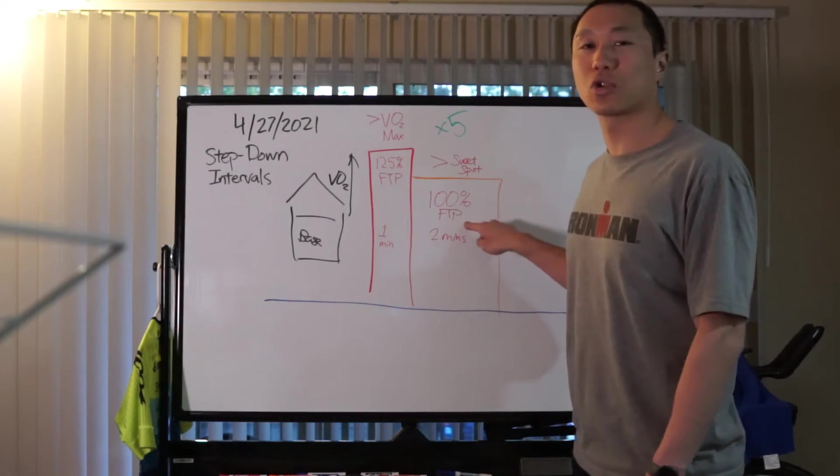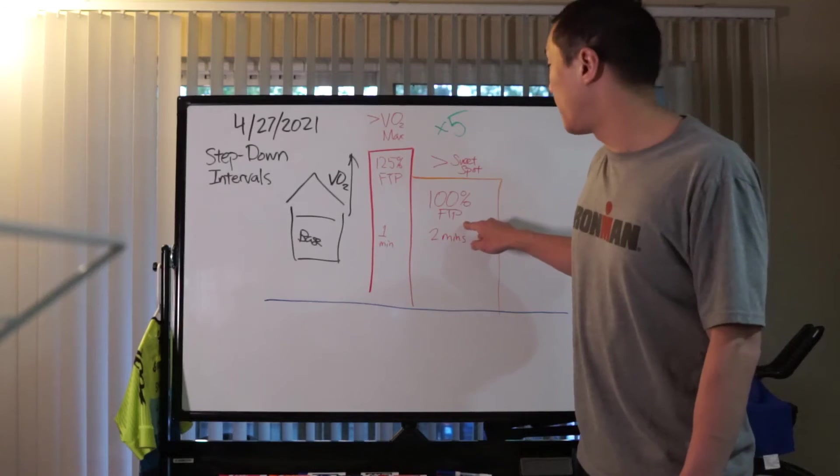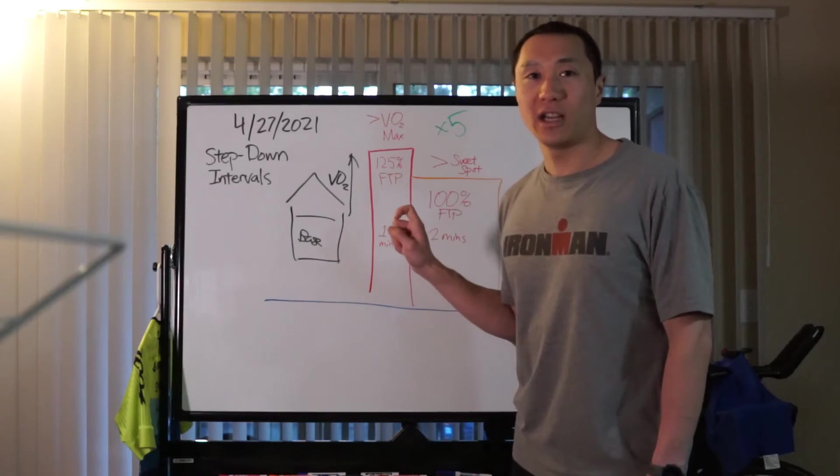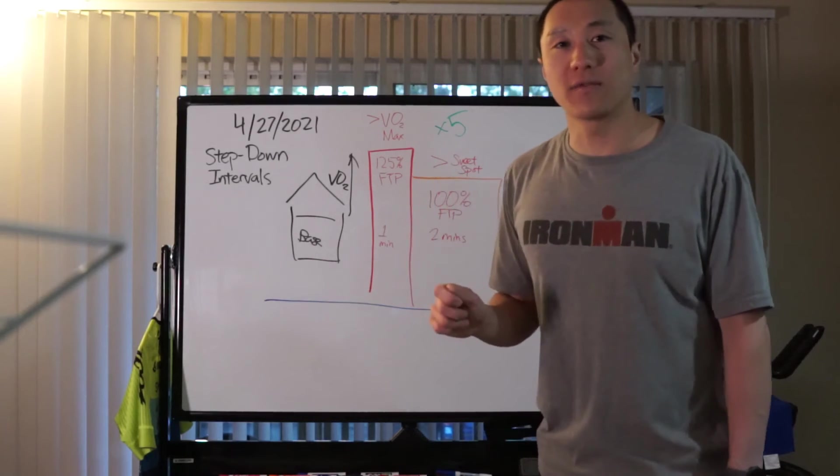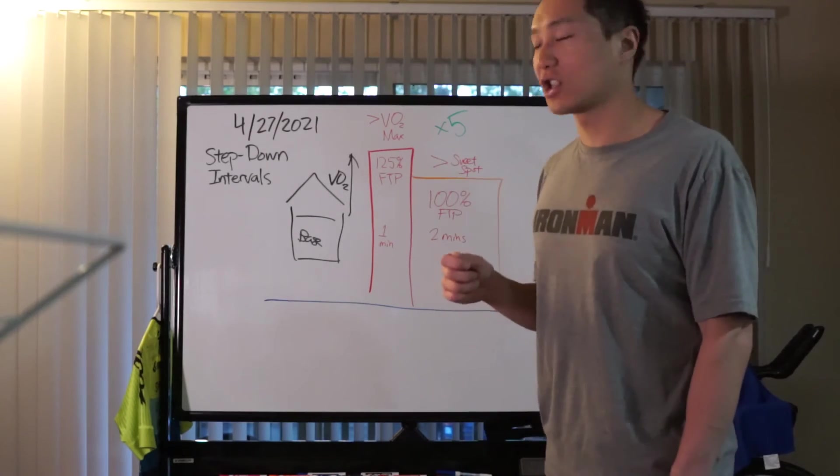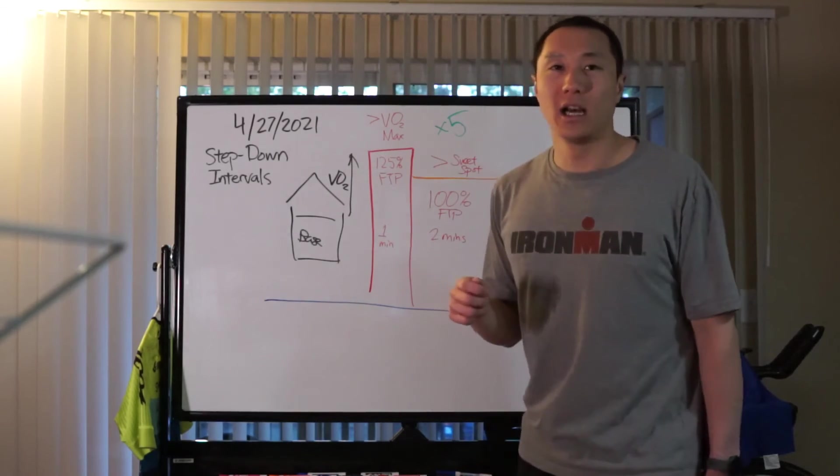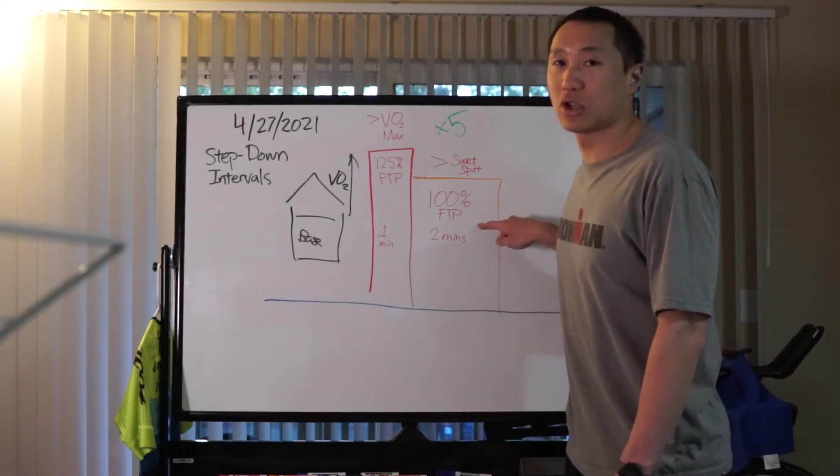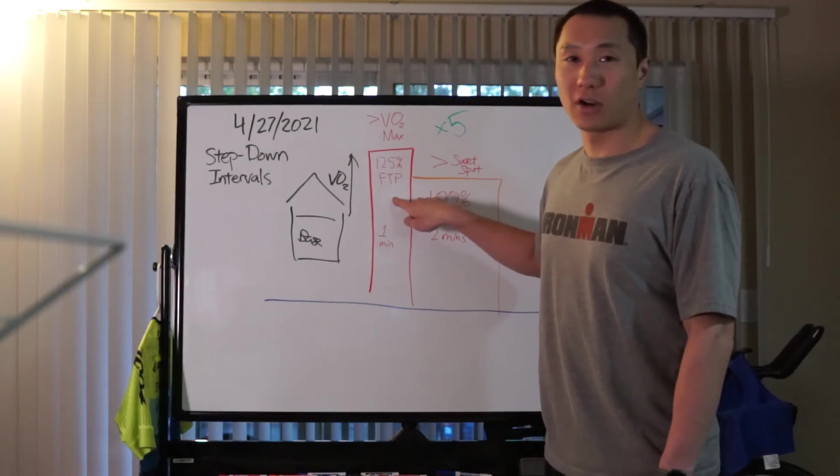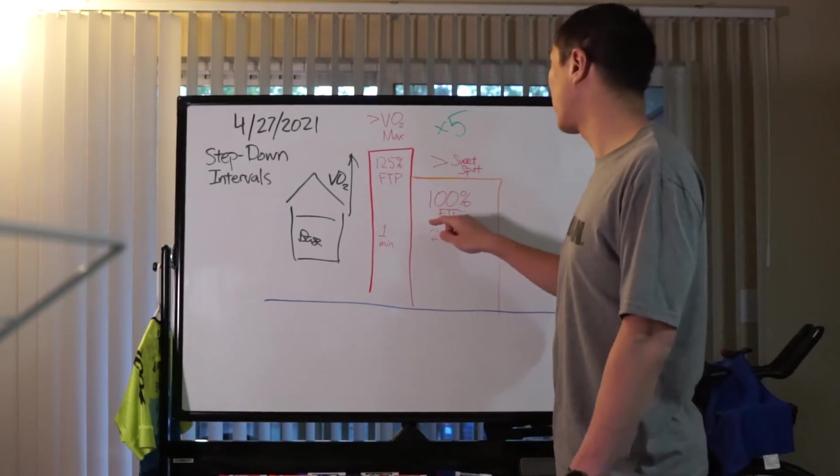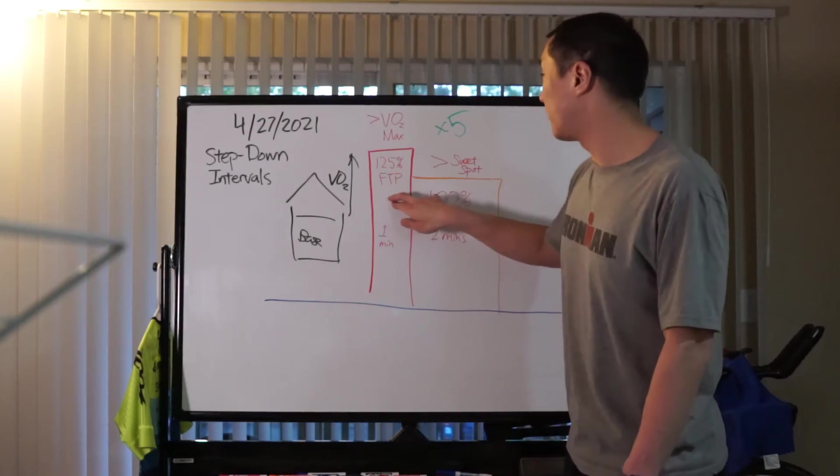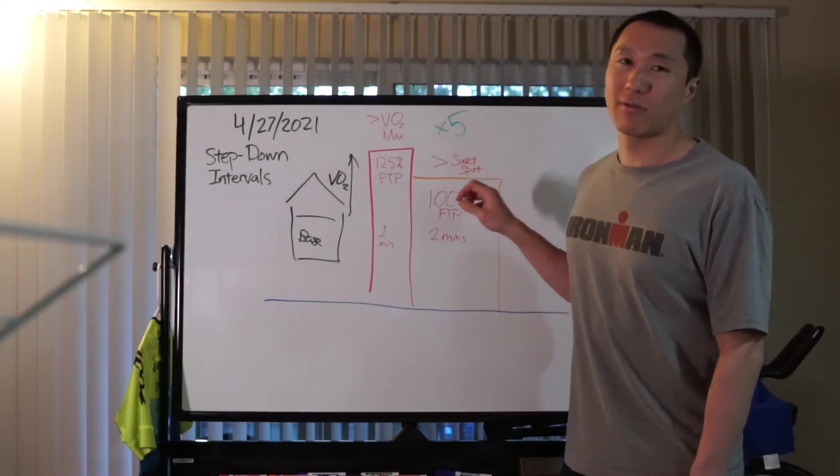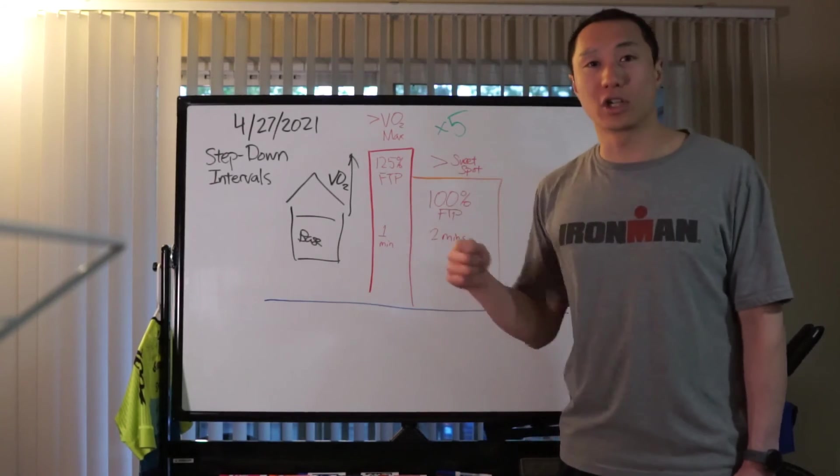By being able to master this type of transition without having too much of a drop in terms of efficiency as well as your heart rate, that will really pay dividends. Your heart rate is likely not going to drop here. Your heart rate is probably going to be spiked from this VO2 max effort, and then when you get to the FTP, your heart rate is probably going to remain fairly constant as you turn through.